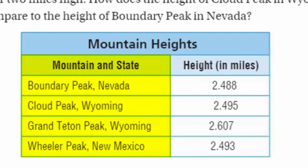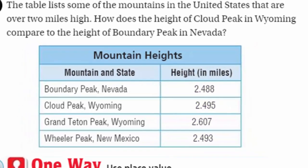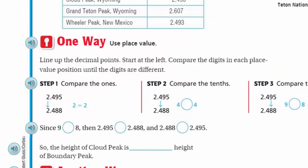Okay, they list the different ones. Mountain and state. We have Boundary Peak, Nevada. We have Cloud Peak, Wyoming. We have Grand Teton Peak, Wyoming. And we have Wheeler Peak in New Mexico. And there's our height. I always like to look at them right away. Okay, I see decimals. I'm scared. Oh, Mr. Wara, don't be scared. You can do it. So let's look closely.